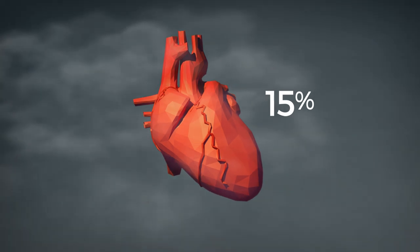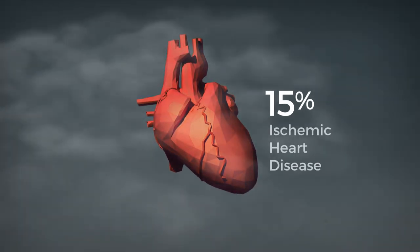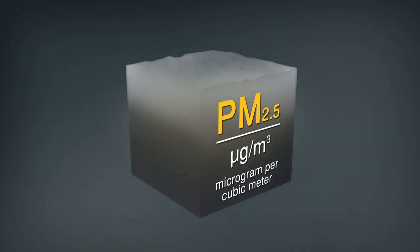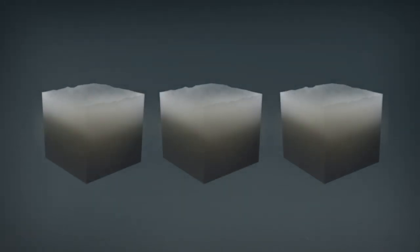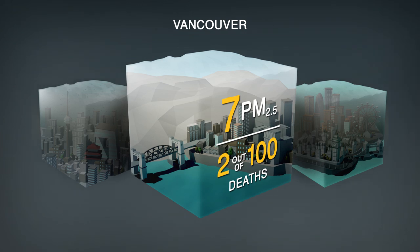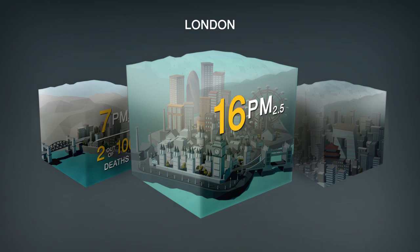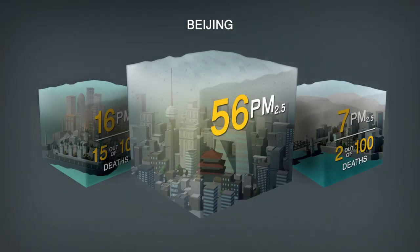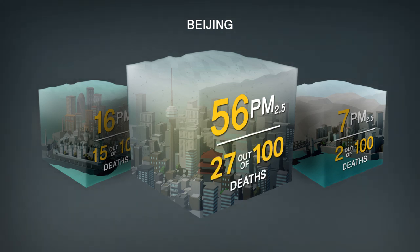About 15% of all deaths in the world are from ischemic heart disease. That's when your heart literally suffocates. Let's look at how the different levels of PM2.5, measured as micrograms of particles per cubic meter, are linked with heart disease in three cities. In Vancouver, which has an average concentration of 7, 2 out of 100 deaths from heart disease are linked with airborne particles. In London, which has a concentration of 16, it's 15 out of 100. And in Beijing, which has a concentration of 56, 27 out of 100.